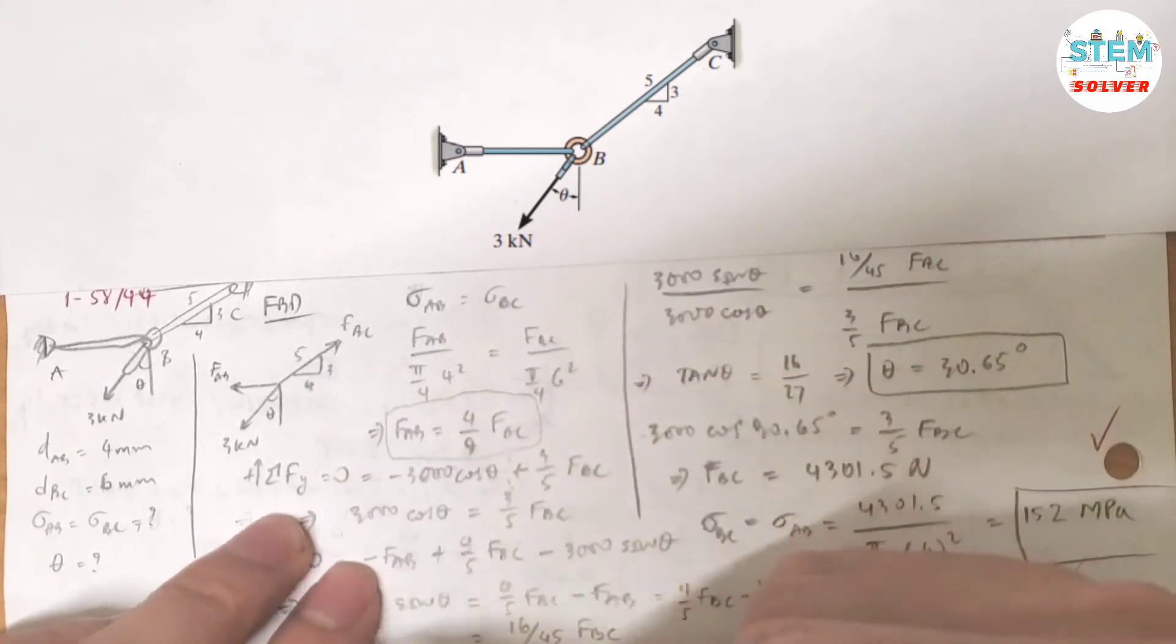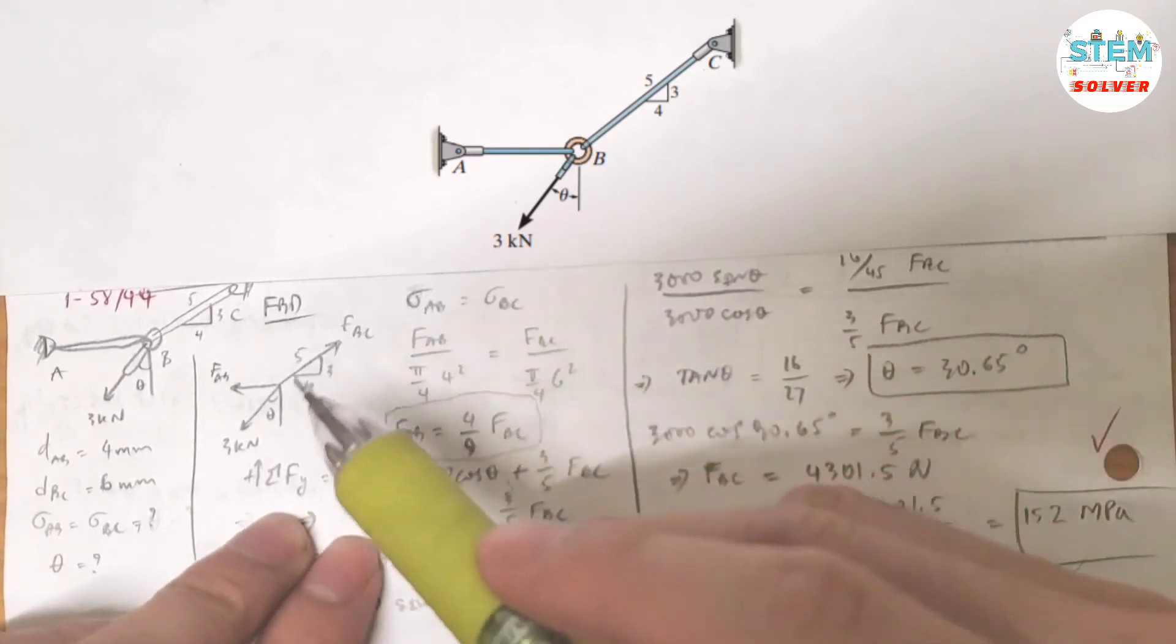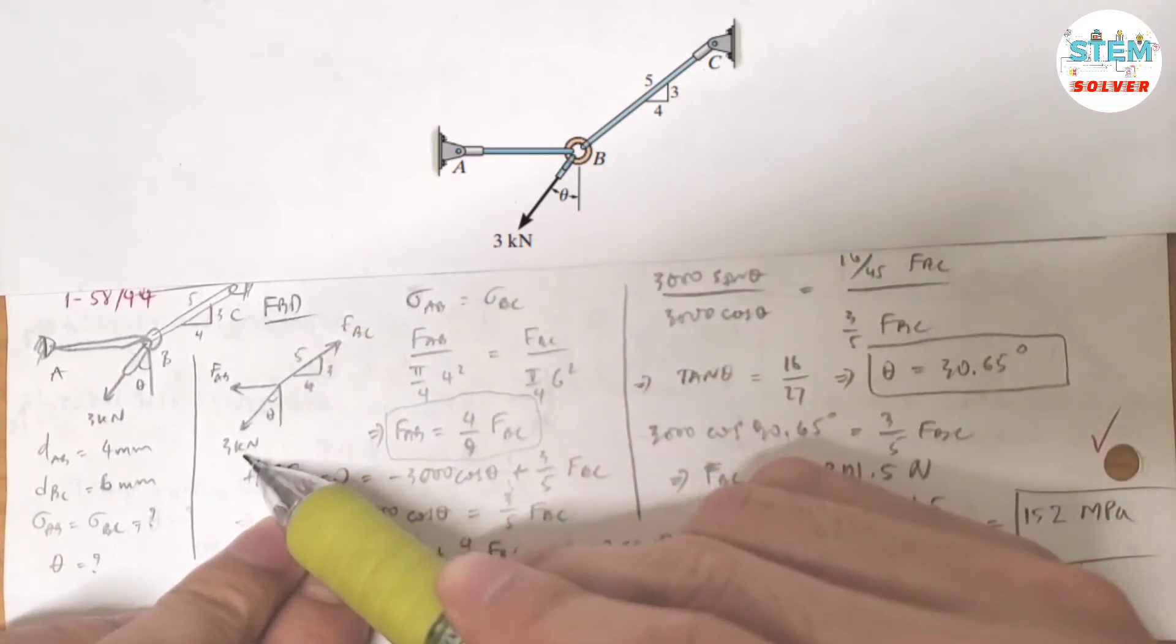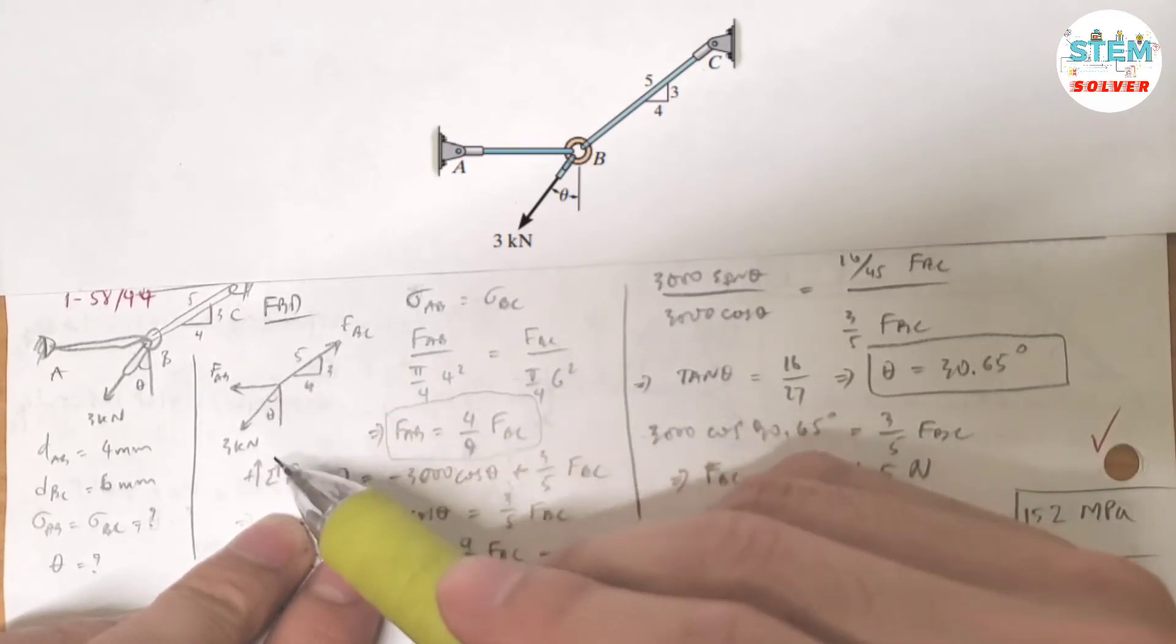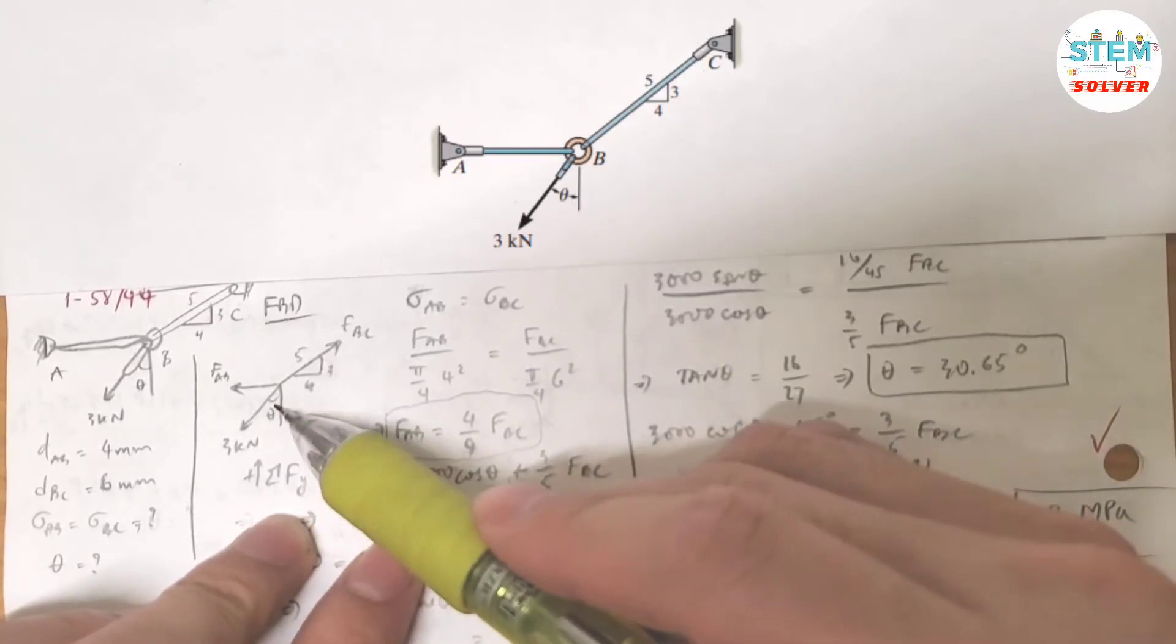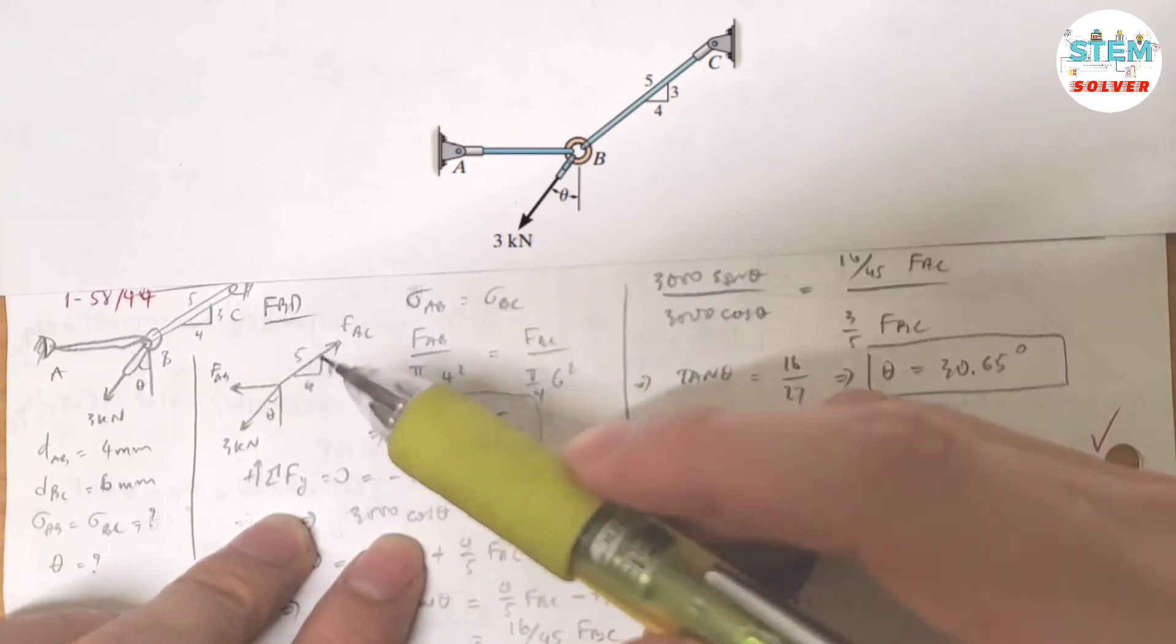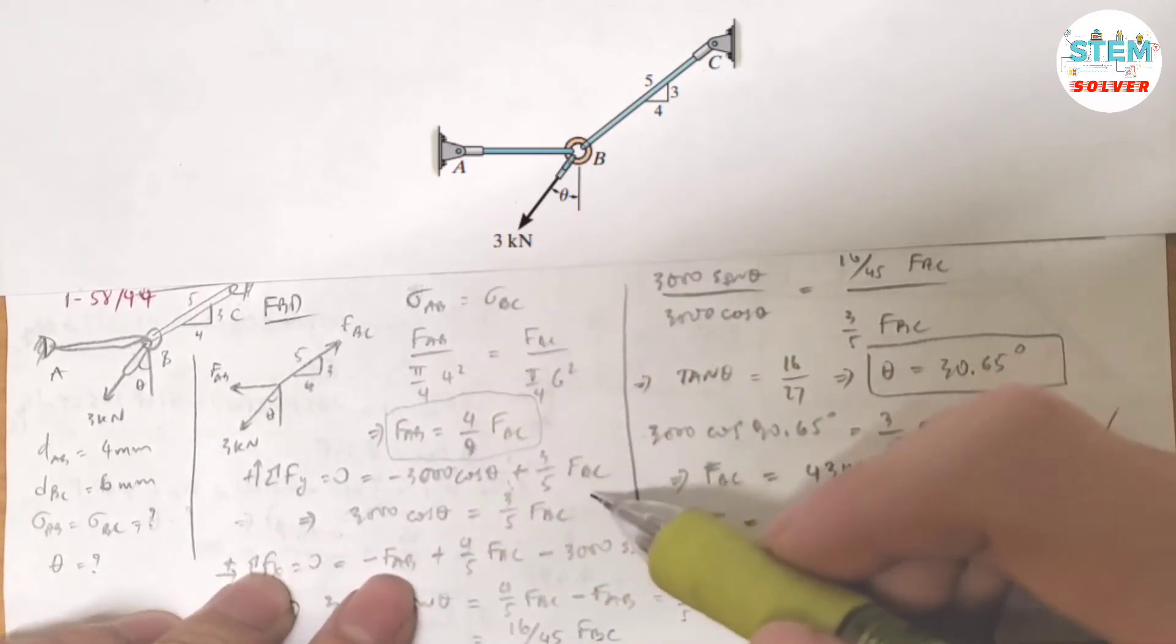The summation about the y-axis is equal to, so you have this 3000 newtons, break it down into x and y components. So I have negative 3000 times cosine theta in the y-direction plus FBC times 3/5 and set that expression equals zero because we are in equilibrium.